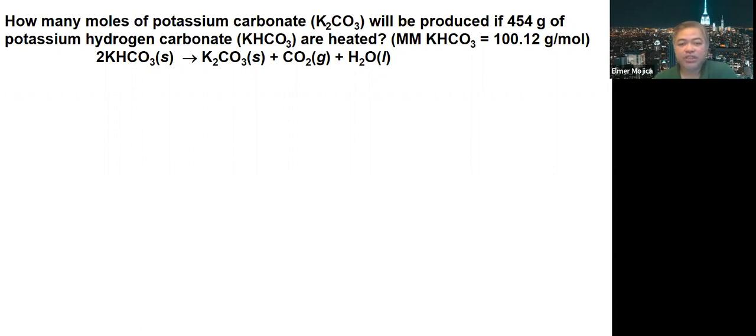You're given the molar mass of the potassium hydrogen carbonate is 100.12 grams per mole. And you're given the reaction: for every two moles of potassium hydrogen carbonate, you produce one mole of potassium carbonate, carbon dioxide, and water.